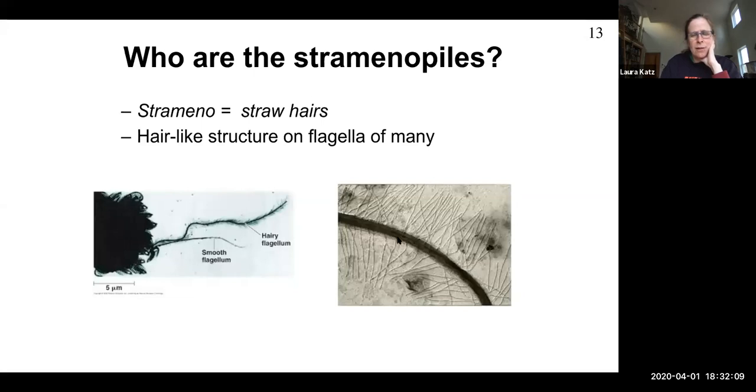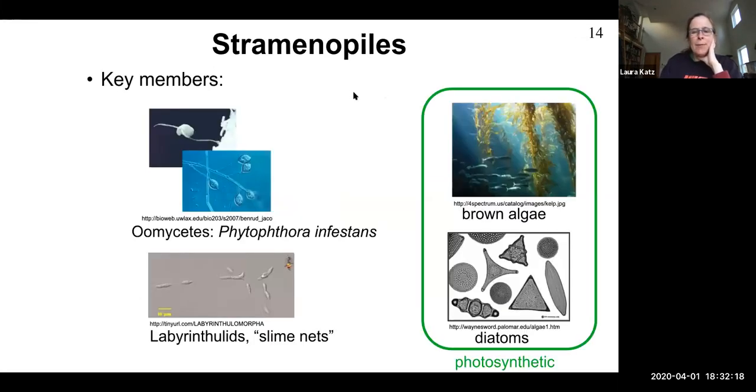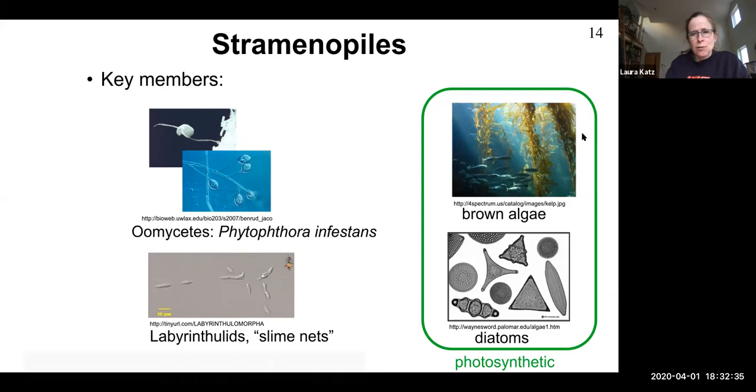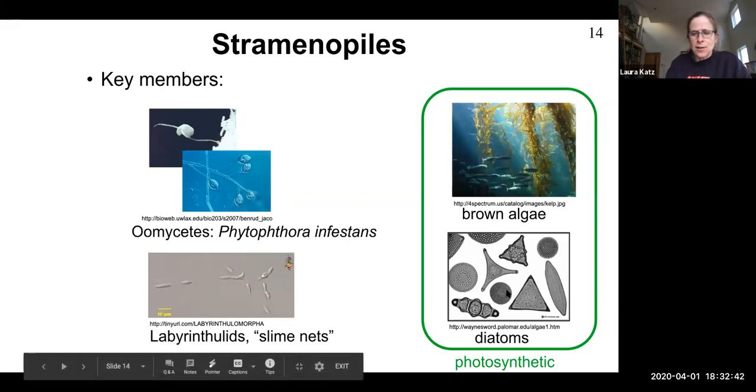Here are some SEMs of these flagella. Here's a stramenopile with two flagella. One is smooth and one is hairy. And here's an up-close cross-section of these hairy flagella. Stramenopile, straw hairs, hairy flagella. The other word for stramenopiles you'll see in the literature is heterokont, different flagella. There are many members I'll show them to you in a minute.